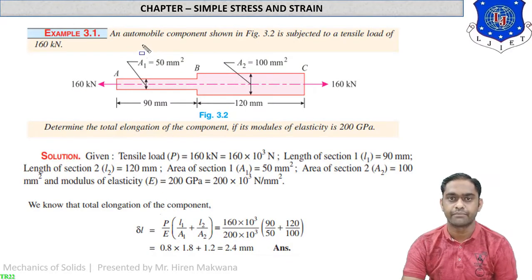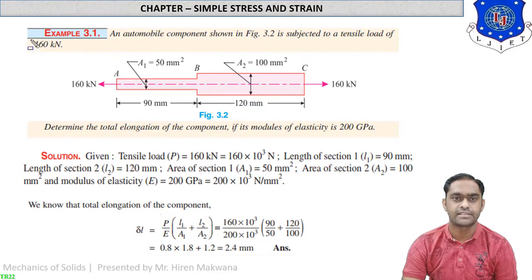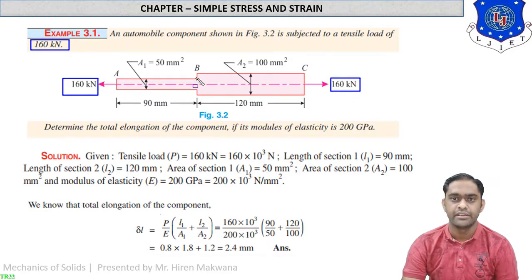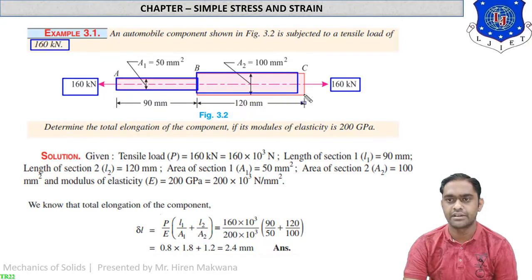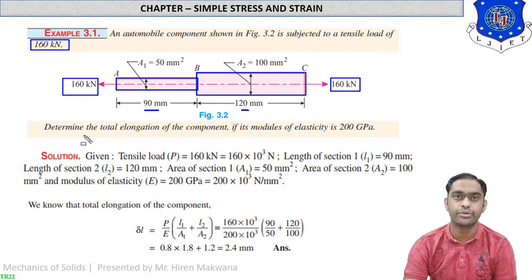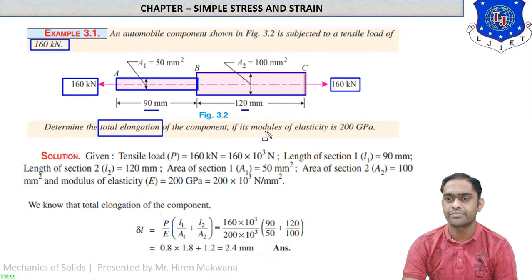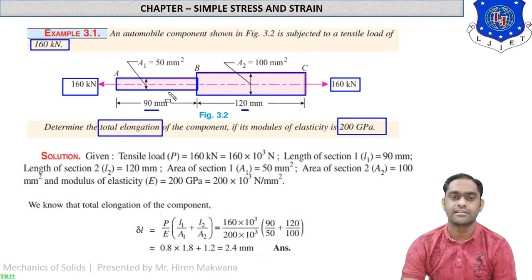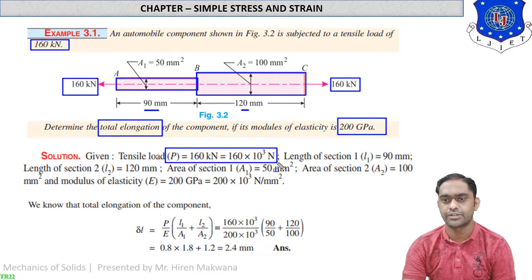Now see Example 3.1. An automobile component shown in the figure is subjected to a tensile load of 160 kN, applied at both ends. There are two different cross-sections: AB is 50 mm square and BC is 100 mm square. The lengths of both sections are 90 mm and 120 mm respectively. We have to determine the total elongation δL of the component.